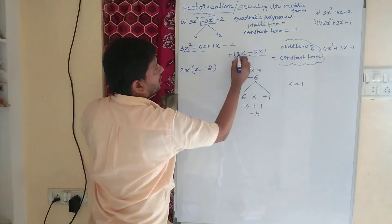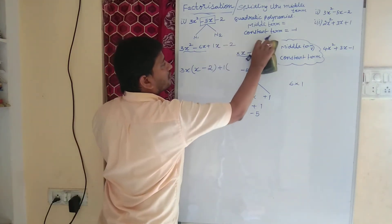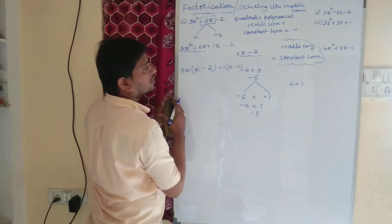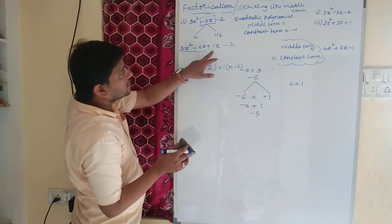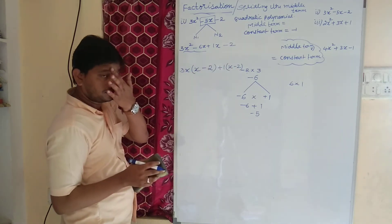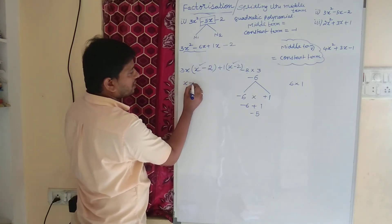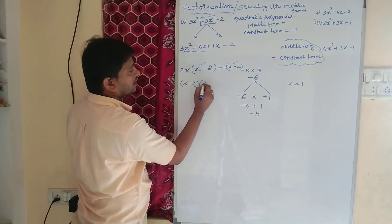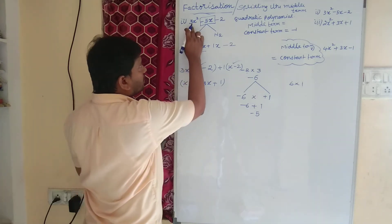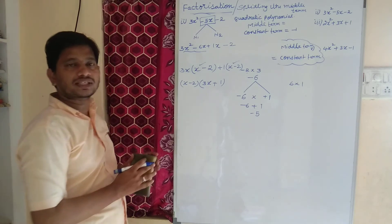Now from the last two terms — plus 1x minus 2 — I can take plus 1 as common: 1 into x gives x, and 1 into minus 2 gives minus 2. Now we have x minus 2 common in both groups. Taking x minus 2 as common, I have 3x and 1 remaining. So the factors of 3x square minus 5x minus 2 are (x − 2) and (3x + 1).